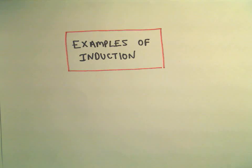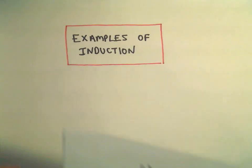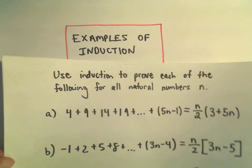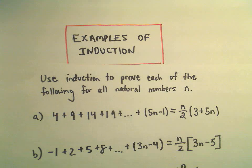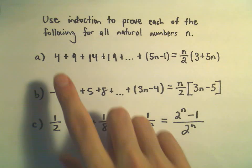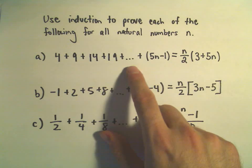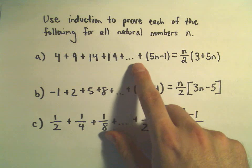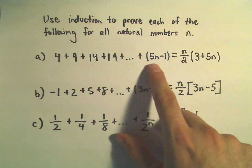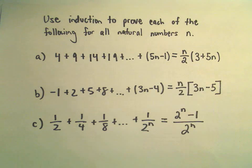In this video we're going to do an example of induction. In this case we're going to prove that 4 plus 9 plus 14 plus 19 plus dot dot dot plus 5n minus 1 is equal to n over 2 times the quantity 3 plus 5n.